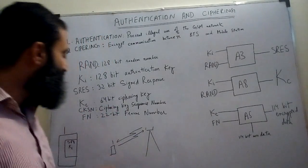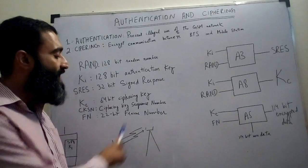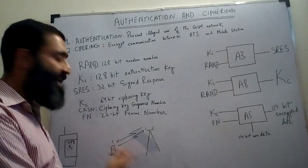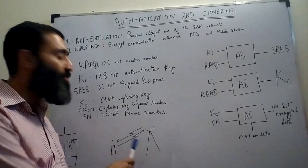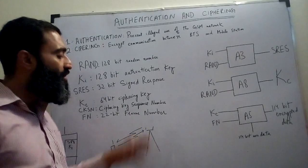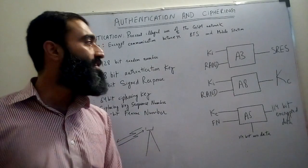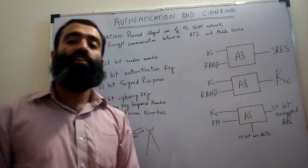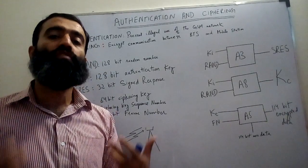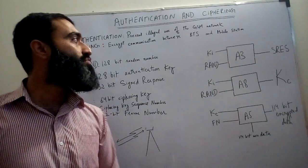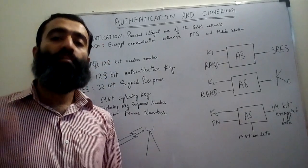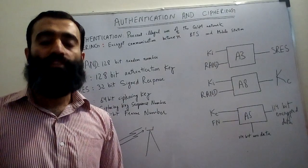The signed response SRES is calculated in the SIM of the mobile station as well as in the network. Once calculated in the SIM, this number is sent over the air interface to the network. The network then compares the two signed responses — that of the network and that sent by the mobile station — and if they match, we conclude that this is a valid and fully authorized user of the network.